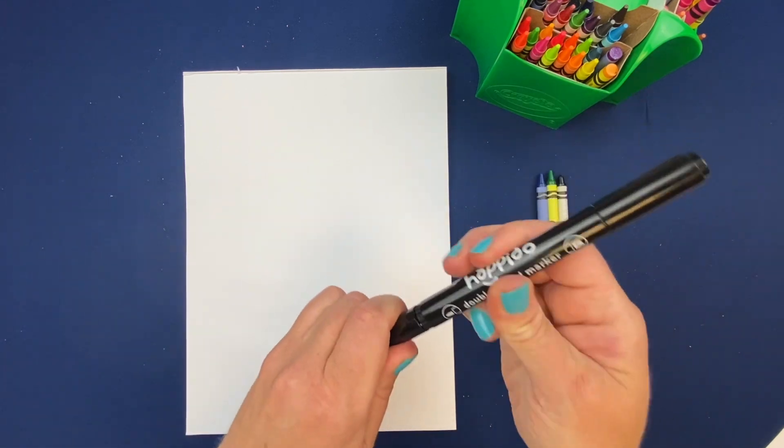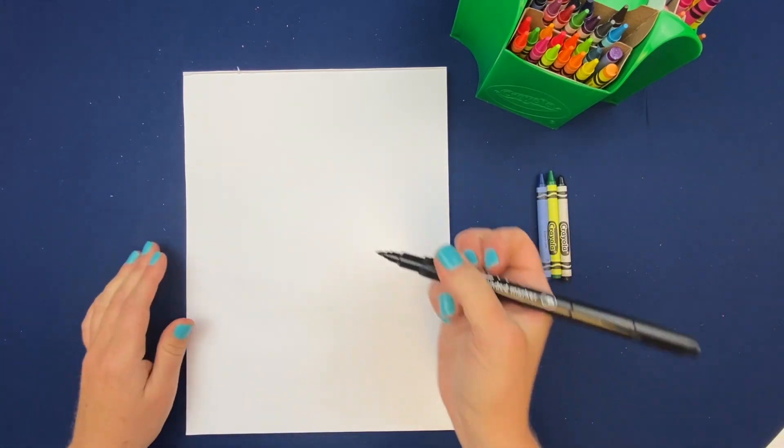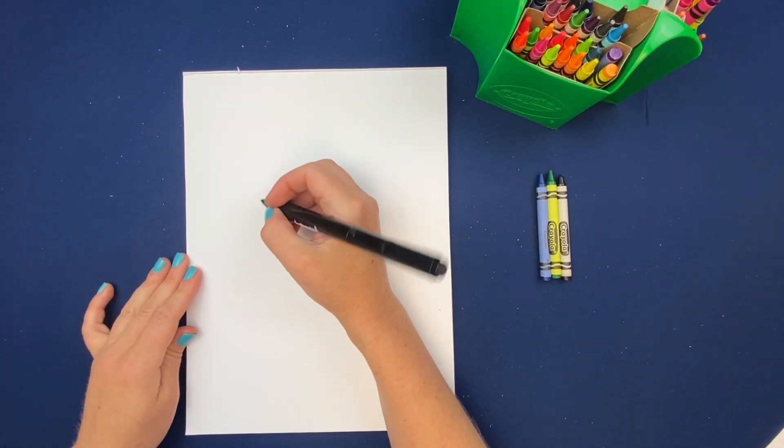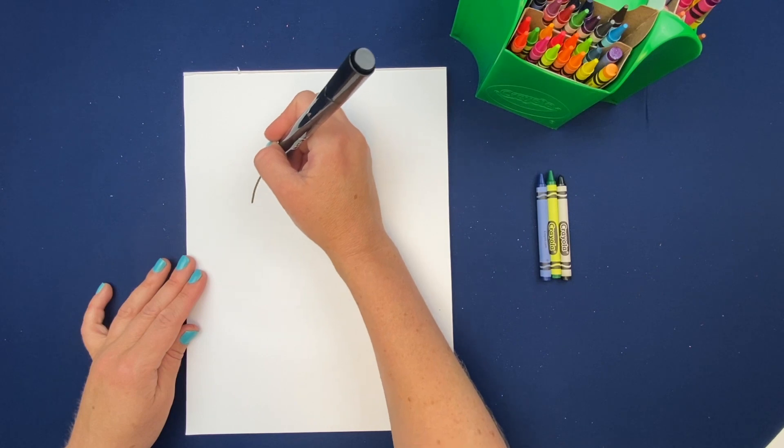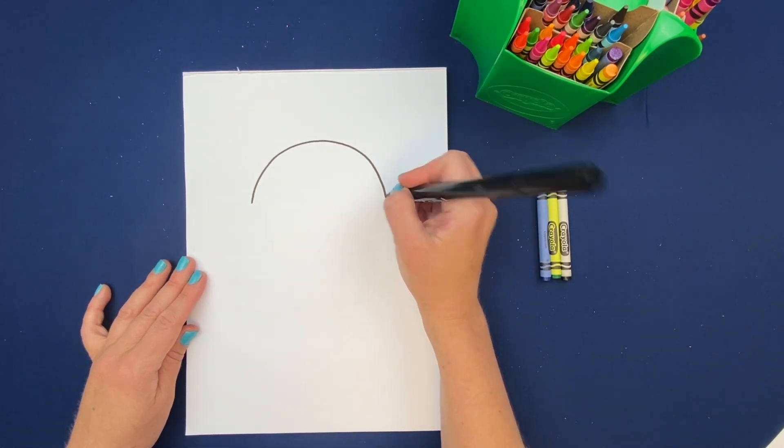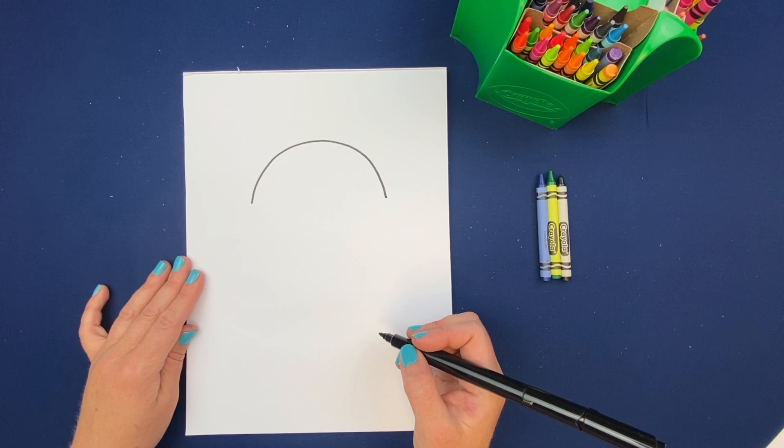Grab that pen. Okay, we're just gonna do his face today. We're gonna start right over here on the left hand side and just do a nice round top portion of his head.